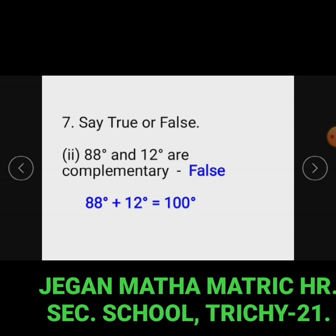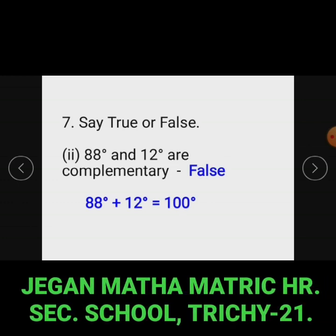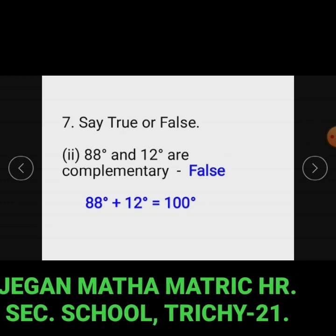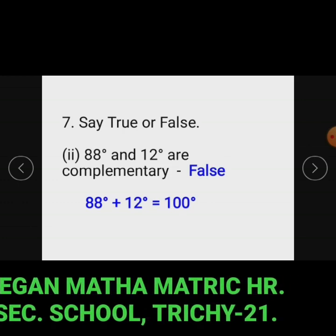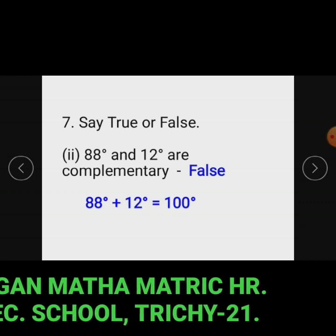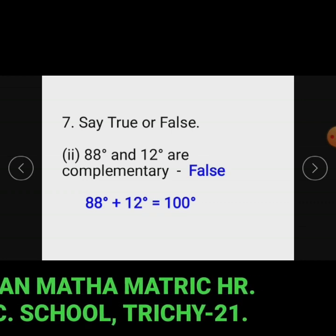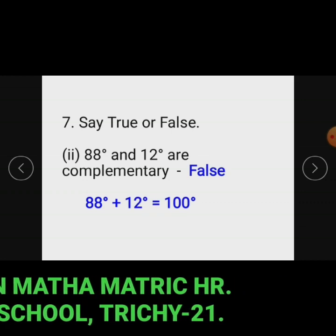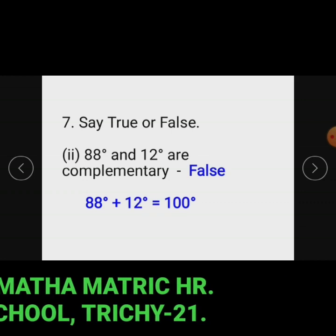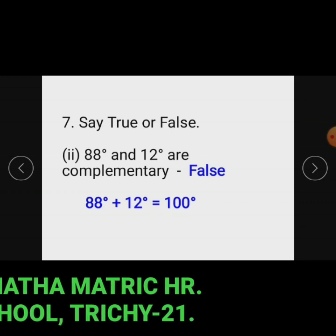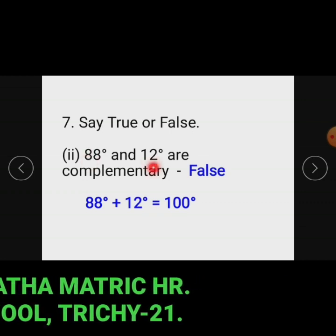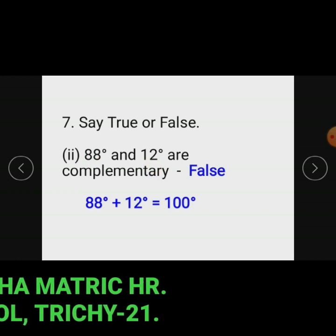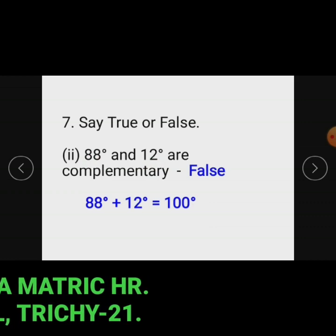Subdivision 2: 88 degrees and 12 degrees are complementary. The statement is false because 88 degrees and 12 degrees add up to 100 degrees, which is not equal to 90 degrees. So the given angles 88 degrees and 12 degrees are not complementary angles to each other. The statement is false.